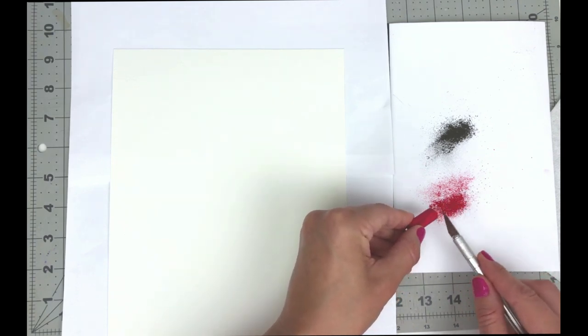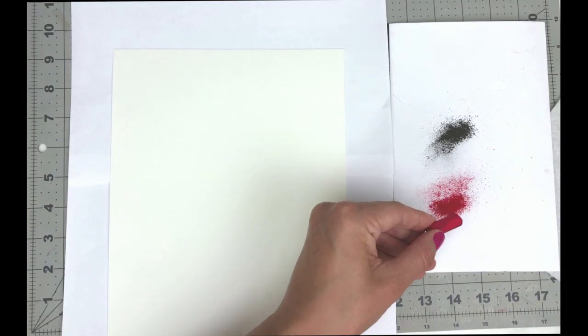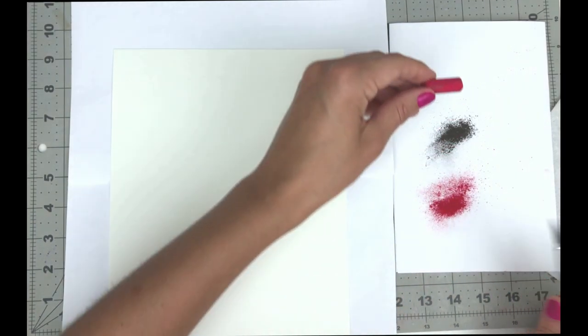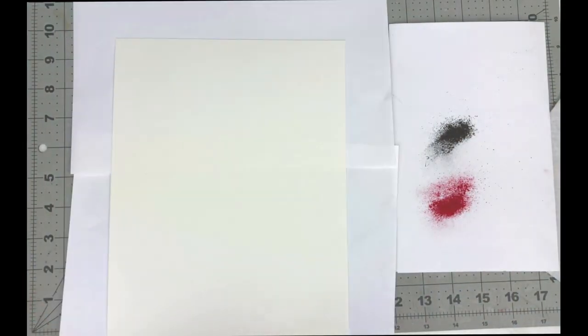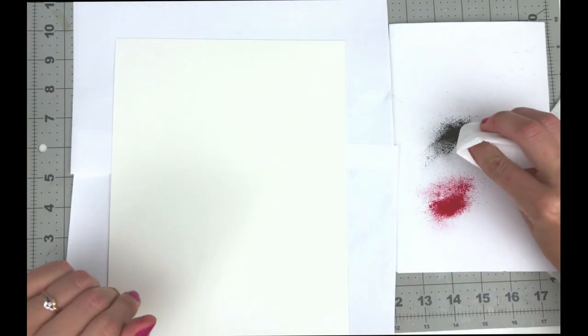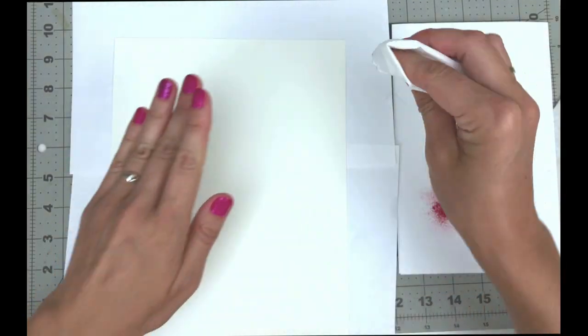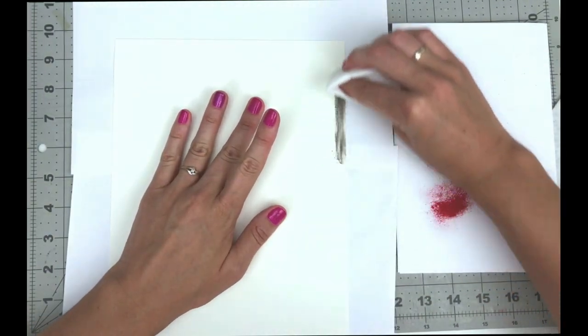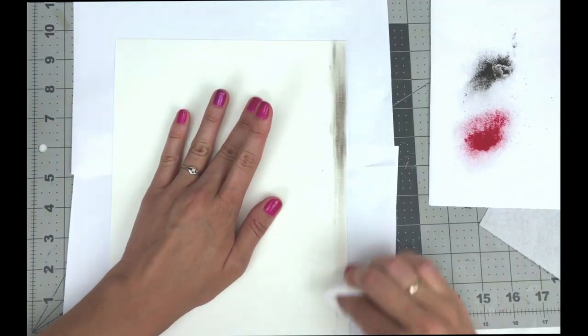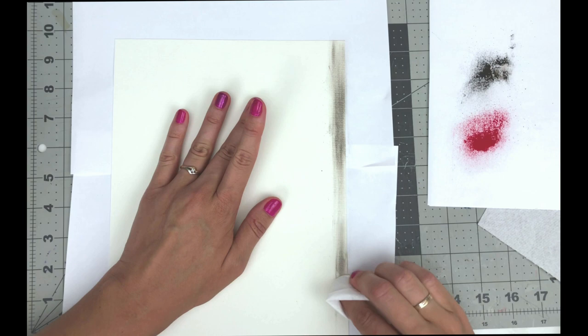And then use just a paper towel or paper napkin and tap in the color, and start to spread it out on your paper mat.